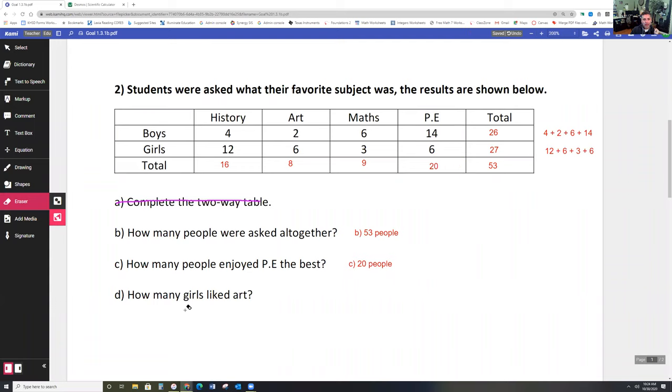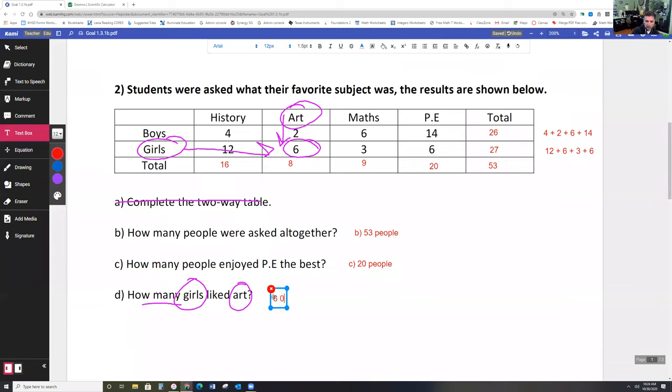And how many girls liked art? Okay, let's look. These are two keywords: girls and art. So here's art, here's girls. That intersect there at 6. Six girls like art. Okay, six girls. Oh, hold on. Six girls. All right, there it is, another one.